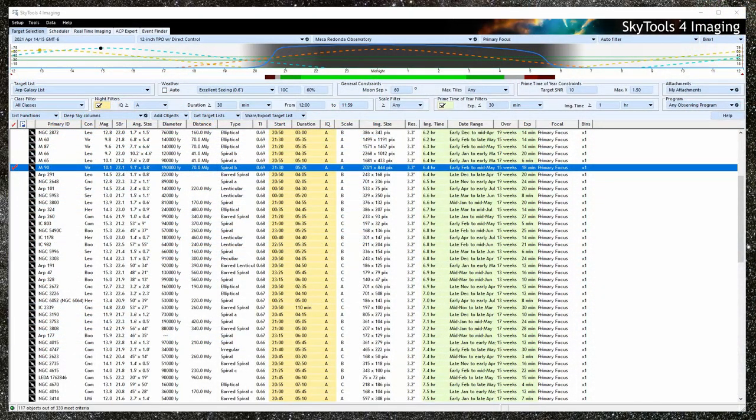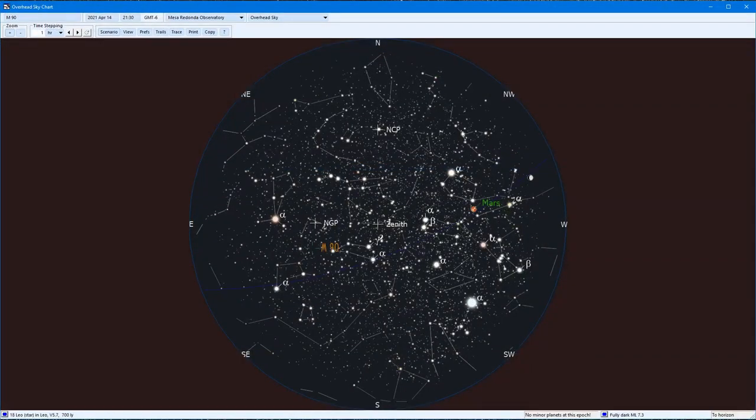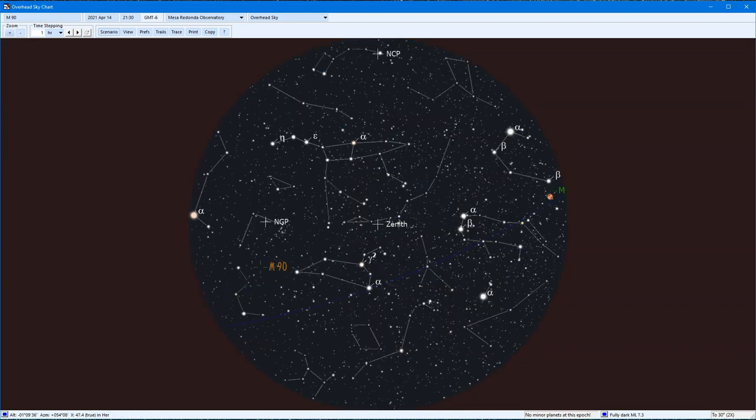SkyTools doesn't start out showing a view of the sky like old-fashioned planetarium software, but that doesn't mean that this capability isn't there. In fact, there are three different kinds of charts available, each intended for a different purpose. The overhead sky chart displays a simulation of the entire sky overhead as seen to the naked eye. It simulates the background sky depending on your light pollution and the current conditions such as daylight, twilight, or moonlight.